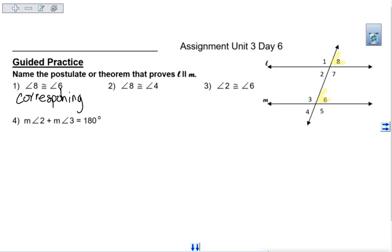Next one, we're looking at angle 8 and angle 4 being congruent. Why are they congruent? They're alternate interior angles.